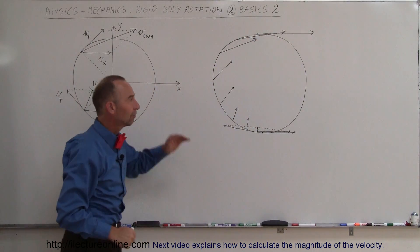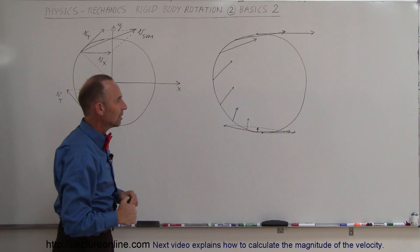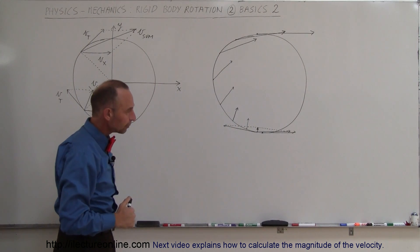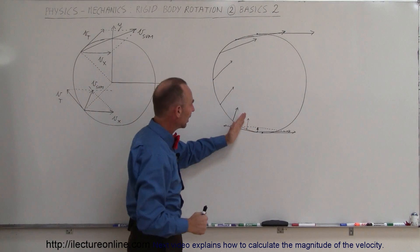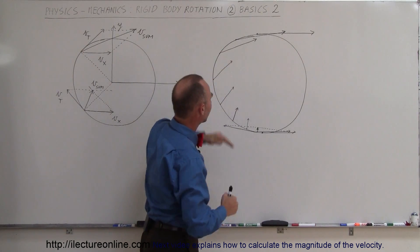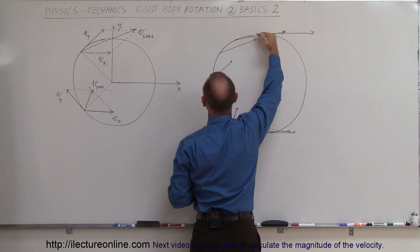Eventually when it gets to the very top, the velocity is completely in the same direction as V sub X, the direction of the car. Hopefully this gives you a picture of how that velocity changes.